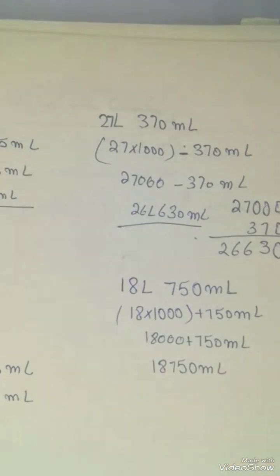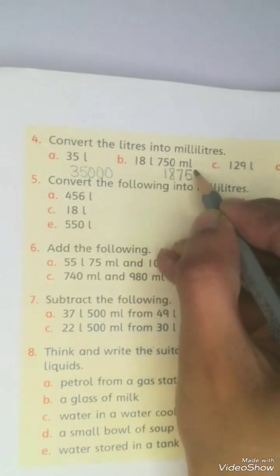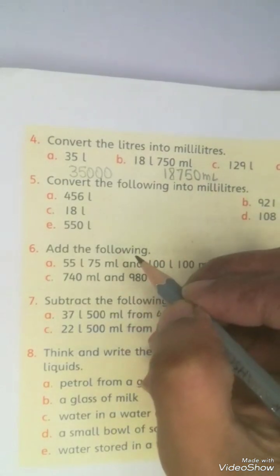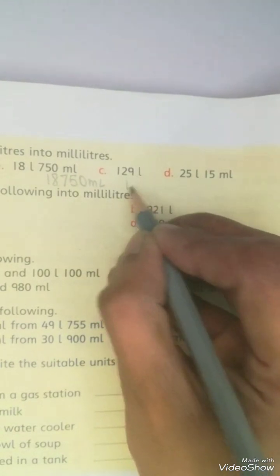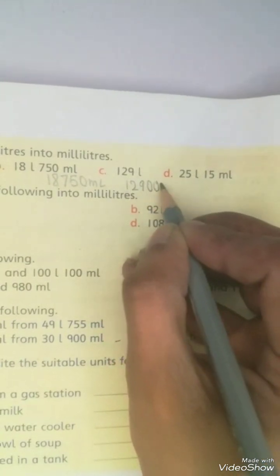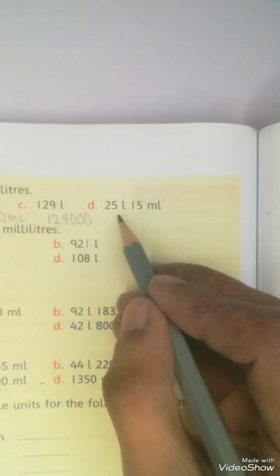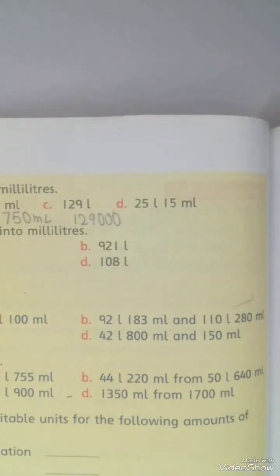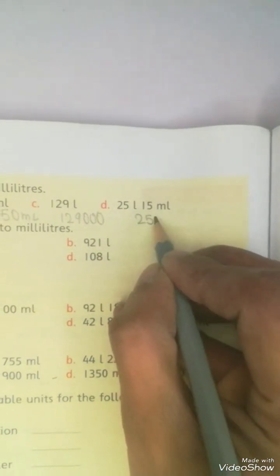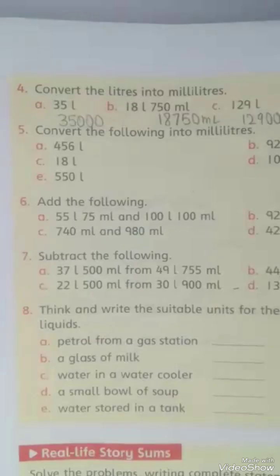The answer is 18,750 milliliters. Now question C is also very simple: multiply by 1000. 25 liters and 15 milliliters — 25 multiplied by 1000 is 25,000, plus 15, giving 25,015 milliliters. This is your answer.